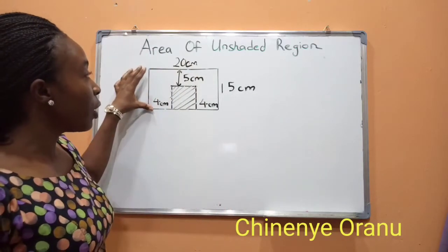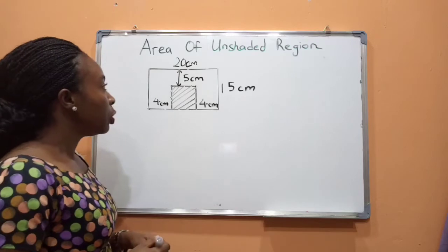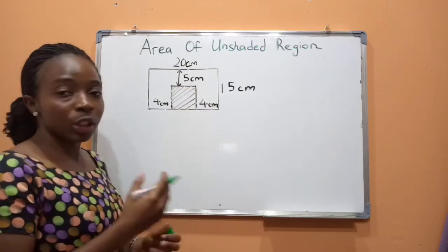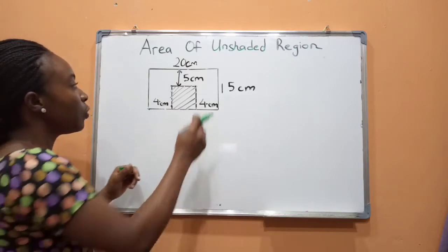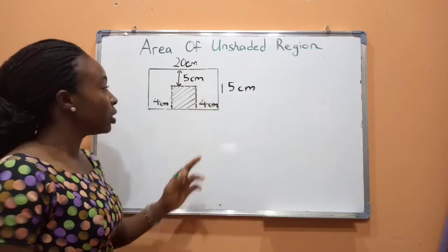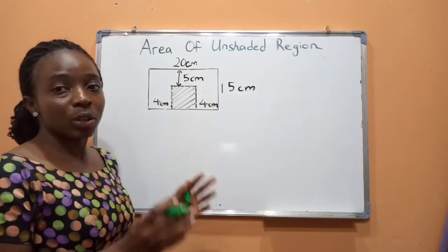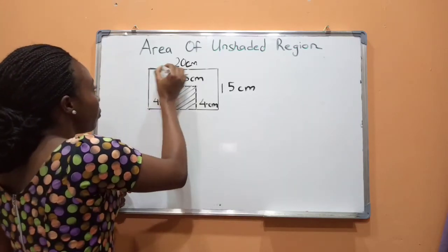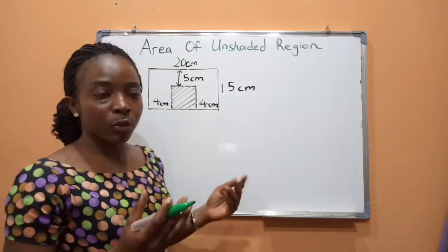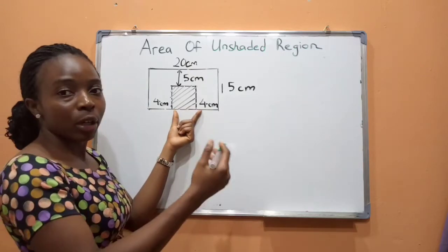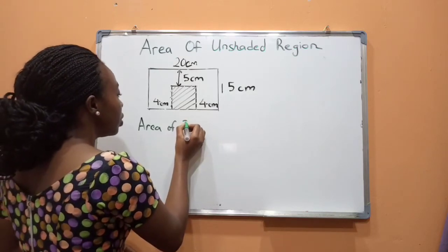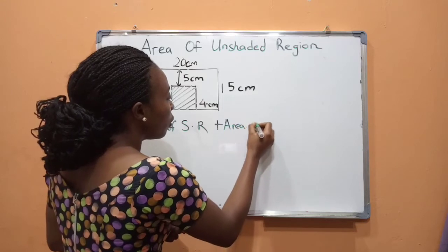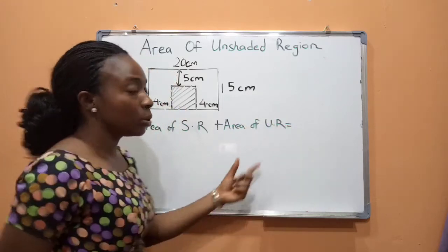Welcome to class. In finding the area of the unshaded region, here's what we need to note. We need to be able to identify the shaded region — this part is the shaded region. Then we need to identify the unshaded region: the plain space where we have no marks is the unshaded region. We also need to understand the area of the whole region, which refers to the entire shape from here to here. So, the formula is: area of shaded region plus area of unshaded region equals the area of the whole region.